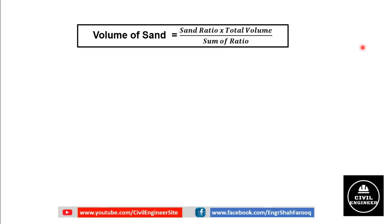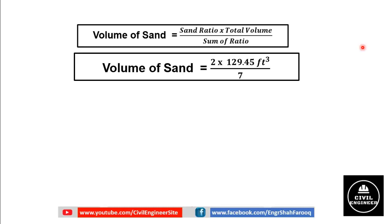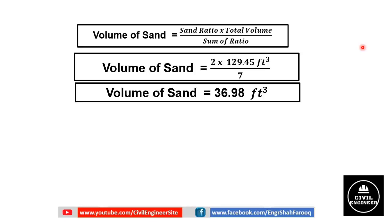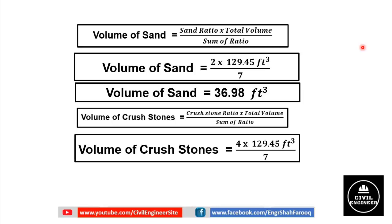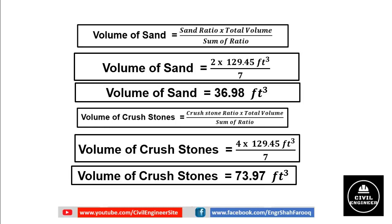For volume of sand: sand ratio × total dry volume ÷ sum of ratios = (2 × 129.45) ÷ 7 = 36.98 cubic feet. Volume of crushed stone equals crushed stone ratio × total dry volume ÷ sum of ratios = (4 × 129.45) ÷ 7 = 73.97 cubic feet.